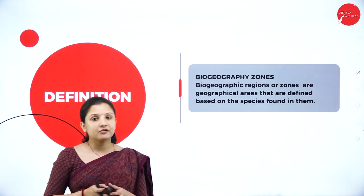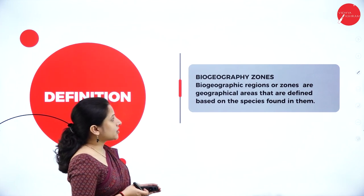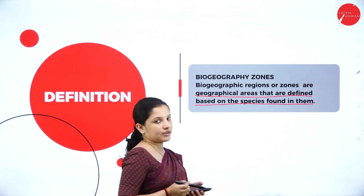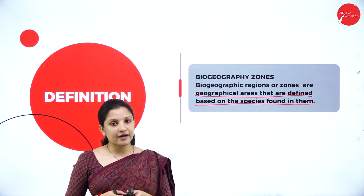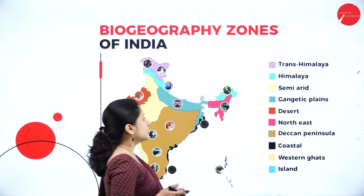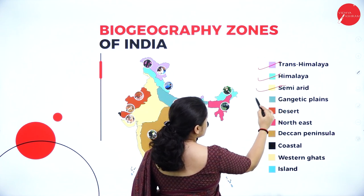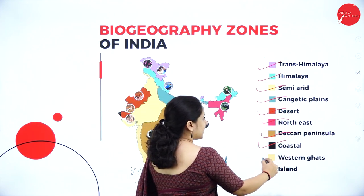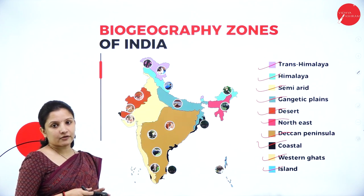Let us talk about the biogeographic zones of India. Biogeographic regions or zones are geographical areas defined based on the species found in them. Based on what kind of species live in a particular habitat, India is divided into different biogeographic zones. The 10 biogeographic zones are: Trans-Himalayan, Himalayan, semi-arid, Gangetic Plains, desert, northeastern, Deccan Peninsula, coastal, Western Ghats, and the islands — which consist of the Andaman and Nicobar Islands.